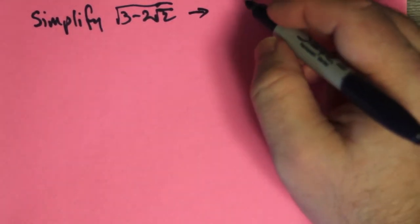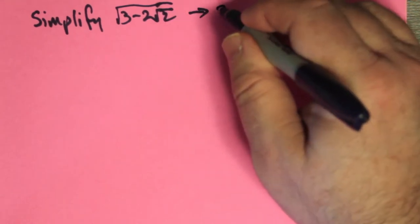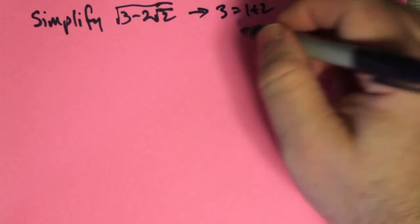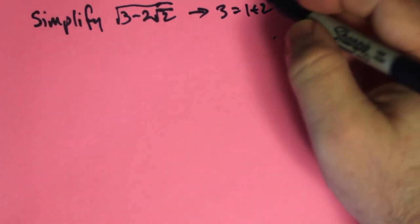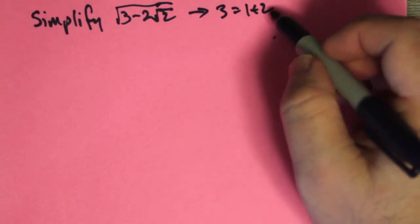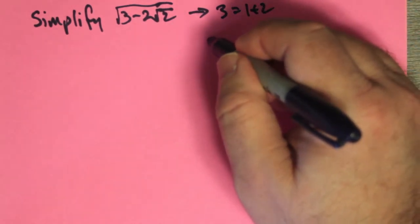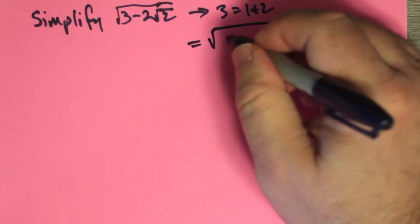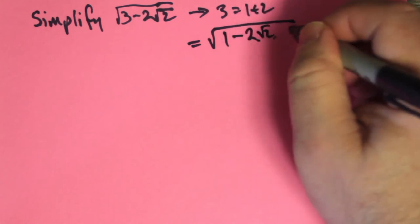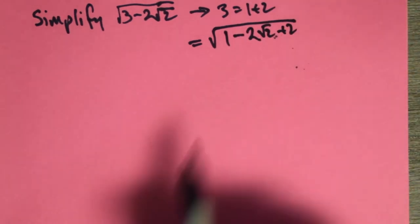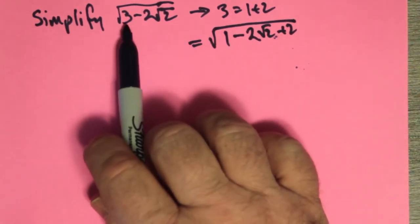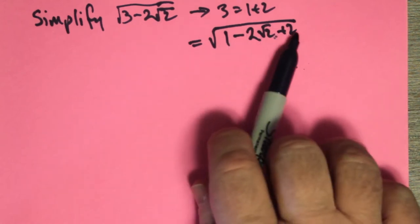So let's look at the expression underneath the square root. So 3 is 1 plus 2. And the negative 2 root 2, we can just keep as negative 2 root 2. The 1 and the 2, we can break up and have this expression. So now this actually, all we really accomplished is break up the 3 into 1 plus 2. We got the minus 2 root 2 in the middle.